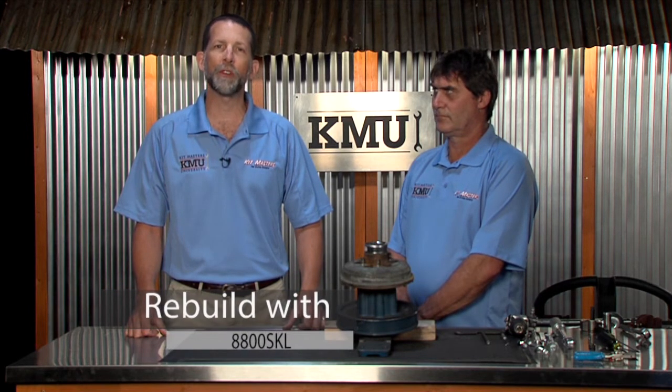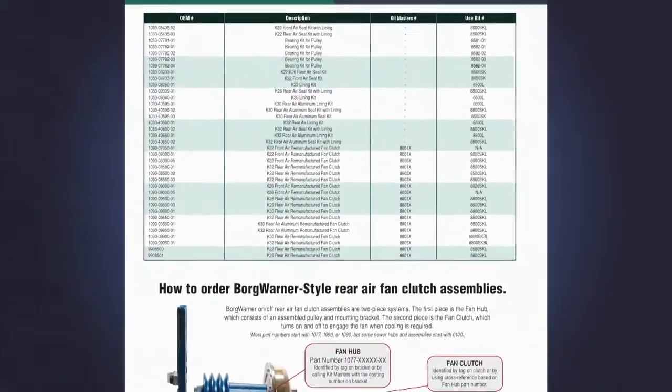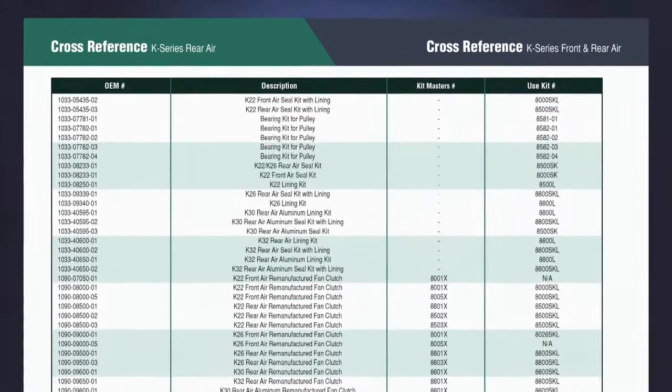In this video, we'll demonstrate how to rebuild a BorgWarner Kaiser style fan clutch using Kitmaster's rebuild kit number 8800SKL. The process for rebuilding any K22, 26, 30, or 32 rear air fan clutch is the same. Although the process is the same for all these fan clutch designs, the part numbers of the kits may vary. Always refer to the Kitmaster cross-reference to choose the proper kit.